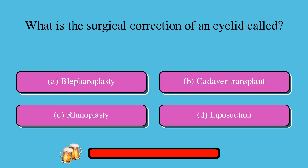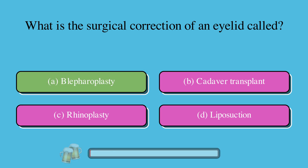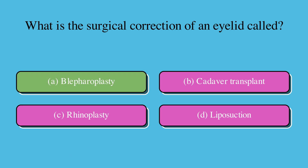What is the surgical correction of an eyelid called? A. Blepharoplasty, B. Cadaver transplant, C. Rhinoplasty, or D. Liposuction. The correct answer is A. Blepharoplasty.